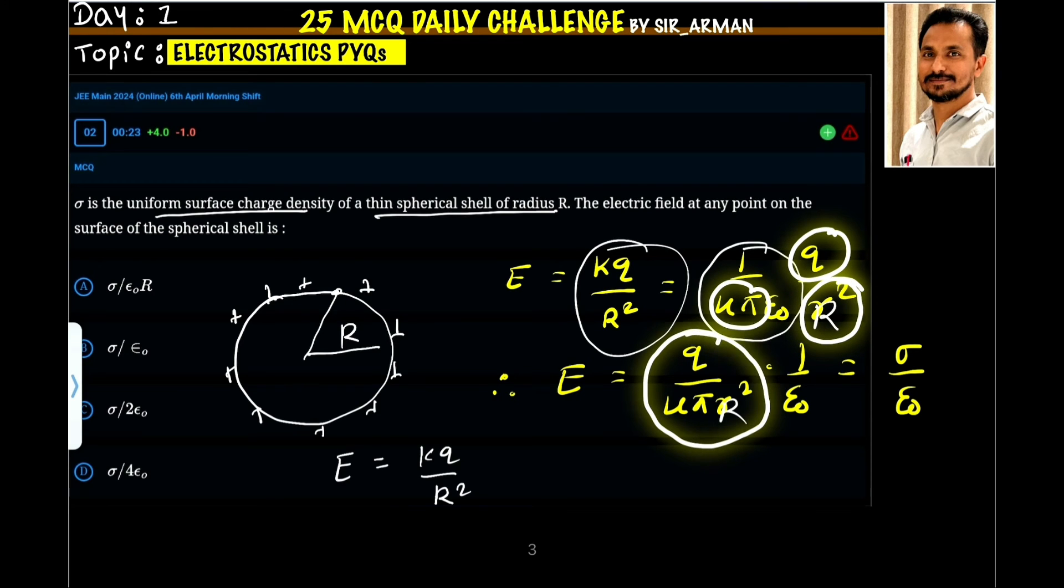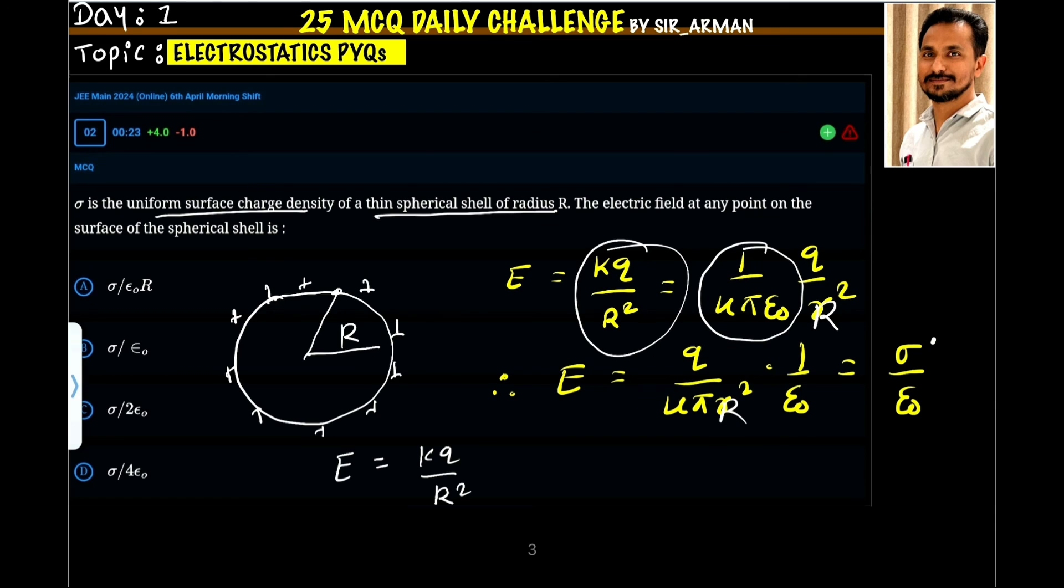So it is q upon 4π r square, where 4π r square is nothing but the surface area. So it is q by A, and q by A is nothing but the surface charge density, so it becomes sigma.